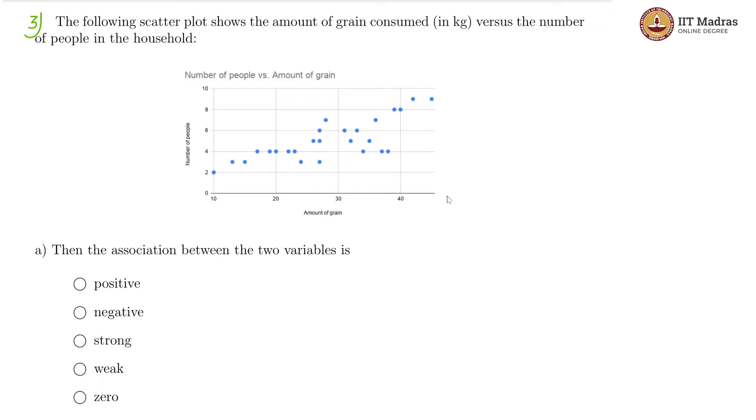So this is the scatter plot. Then the association between the two variables is positive or negative, strong or weak or zero. So first of all, as the amount of grain is increasing, we see that the number of people is also increasing. There is that positive association between them.